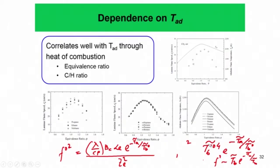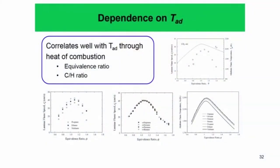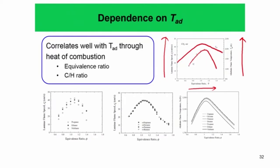This strong dependence of burning flux on temperature shows up in experiments and simulations — we expect the burning flux to have a very strong adiabatic flame temperature dependence. We find in experiments that the laminar flame speed to leading order is most strongly governed by the adiabatic flame temperature. This is demonstrated by plotting laminar flame speed on the y-axis versus equivalence ratio on the x-axis for a methane-air mixture alongside the adiabatic flame temperature on the other y-axis — the flame speed closely mimics the adiabatic flame temperature profile.